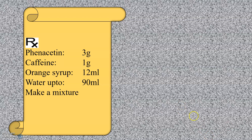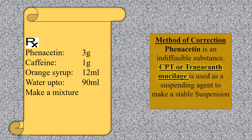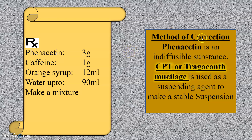In this prescription, the ingredients are phenacetin, caffeine, orange syrup, and water, and we have to make a mixture. Since phenacetin is an indiffusible substance, the method of correction is to use CPT — compound powder of tragacanth — or tragacanth mucilage as a suspending agent to make a stable suspension.